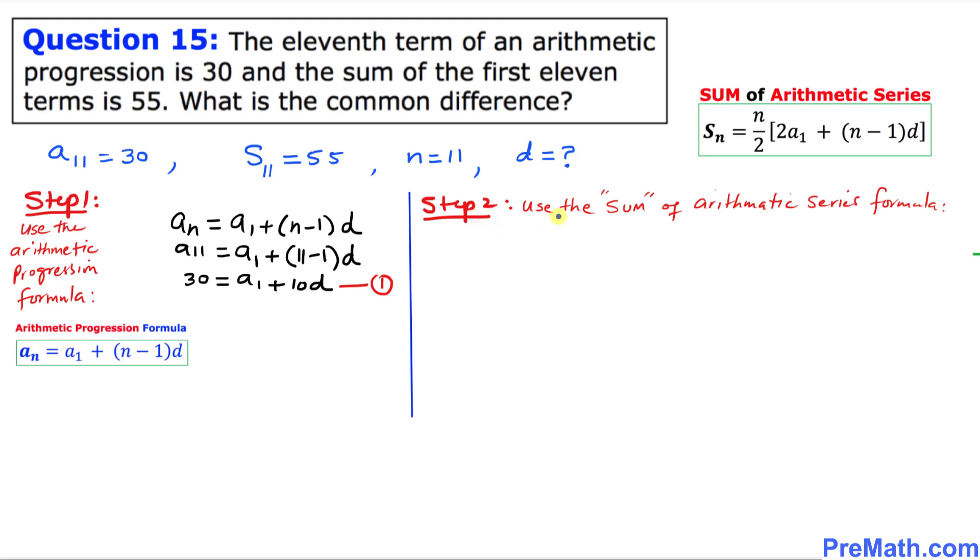And in step 2 we're going to be using the sum of arithmetic series formula. We have been given S of 11. So I'm going to write down S of 11 equals N, in our case 11, divided by 2. And then inside parentheses is going to be 2 times A1 plus N, which is 11 minus 1 times D.